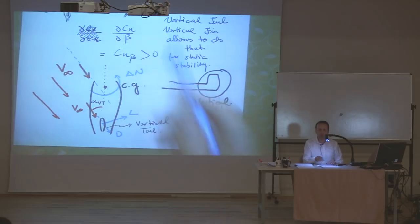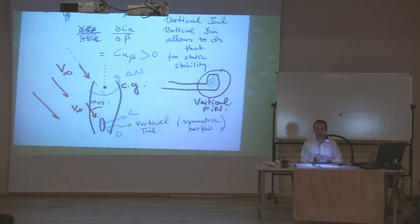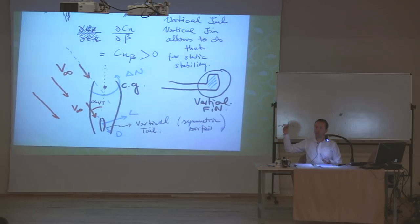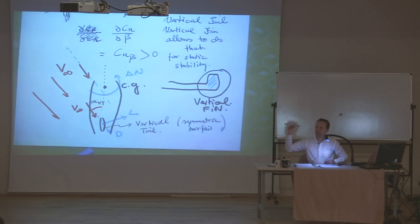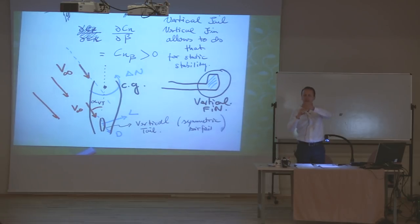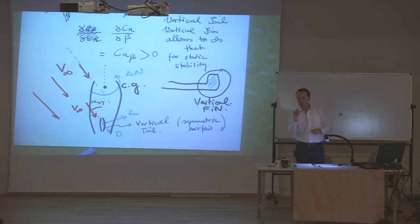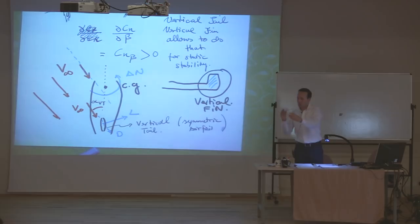This is the principle of weathercock stability: the vertical tail naturally aligns the airplane with V infinity. Without the vertical fin, there is no reason for the airplane to fly straight. It's very similar to boats, which also have fins. The fin allows you to rotate your nose toward the direction of motion; otherwise, nobody wants to fly sideways.